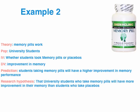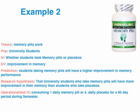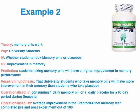Put all those together and our hypothesis — which is broad — is: 'University students who take memory pills will have more improvement in their memory than students who take placebos.' For the operationalized IV, we specify: the experimental group takes one pill every day for a semester of 90 days, while the control group takes a daily placebo. This is a single-blind experiment because we're eliminating the placebo effect. For the operationalized DV, we need a scoring system to compare the change — let's say a Stanford-Binet memory test sourced from the web. We test everyone before the 90-day trial and after, and the DV is the improvement or change in score out of 100 on that test.